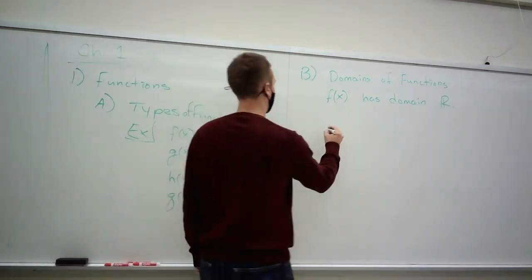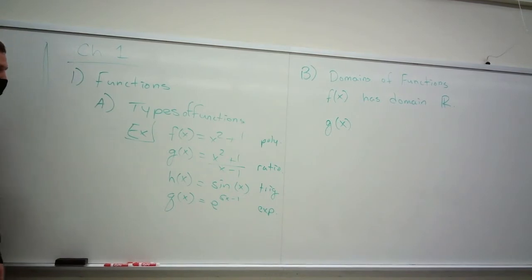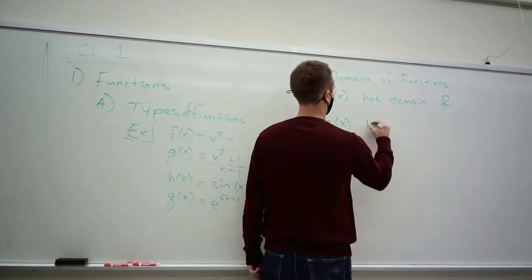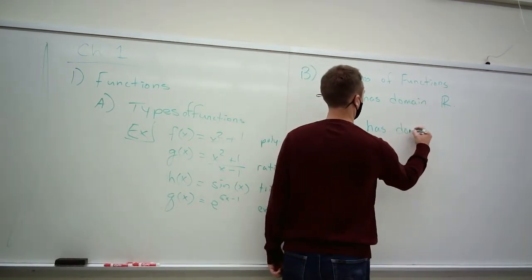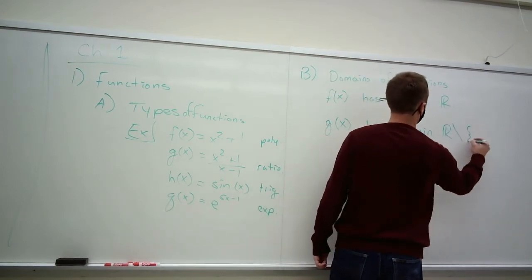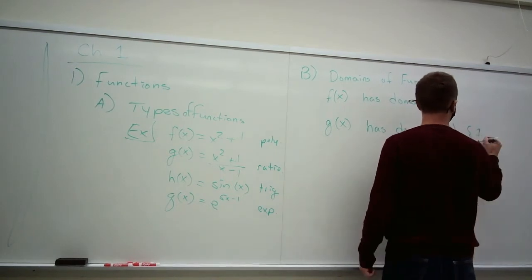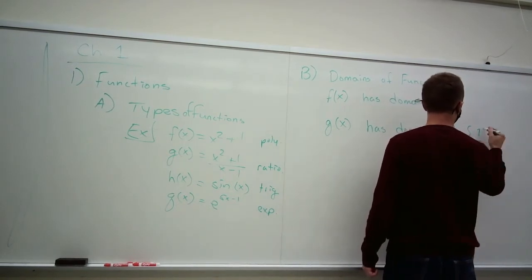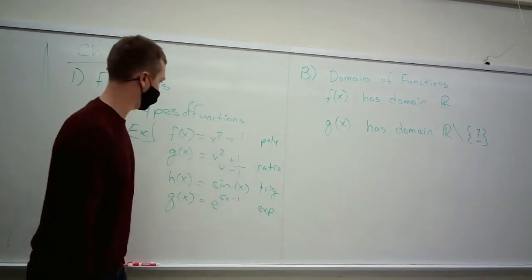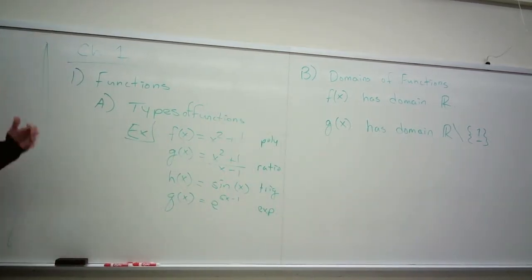So g of x introduces the possibility that we might divide by something that we can't. With rational functions, you need to worry about division by zero. So you have to take out one from this one. Pick all the real numbers, you can plug those guys in, but you can't plug in one because you have division by zero. So all the reals minus that one.